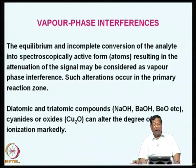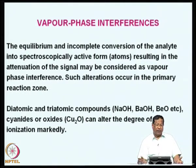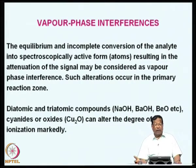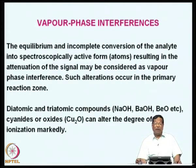The equilibrium and incomplete conversion of the analyte into spectroscopically active form—that is, atoms—resulting in the attenuation of the signal may be considered as vapor phase interference. Metal atoms formed need to get into the vapor phase system. Equilibrium and incomplete conversion are the only factors that can change the concentration of atoms in the vapor phase, and such alterations usually occur in the primary reaction zone.